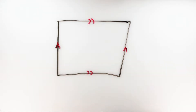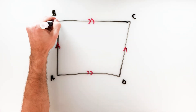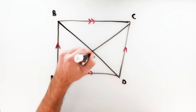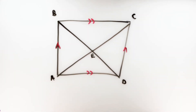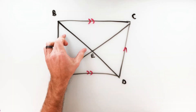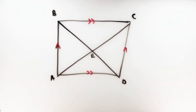The last property has to do with the diagonals. In parallelogram ABCD, we're going to draw both diagonals and call their intersection point E. The property is that in a parallelogram, the diagonals bisect each other. Bisect means to cut in half, so this property says the two diagonals cut each other in half at point E. That means BE equals DE, and AE equals CE.